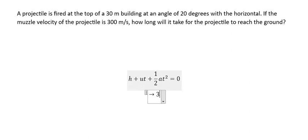U is about 300 meters per second, and we multiply this by the angle. That is sine of 20 degrees.